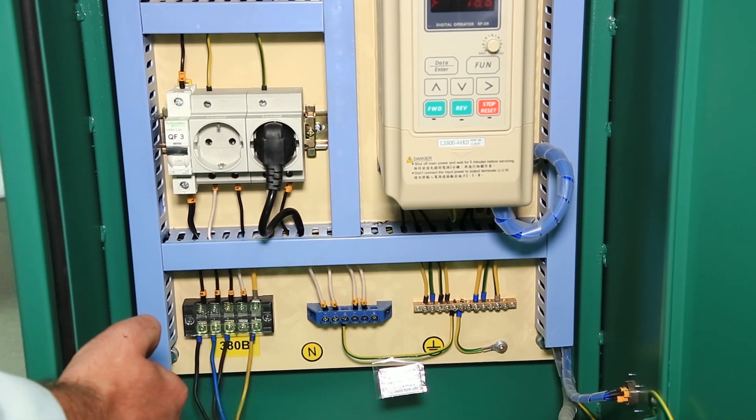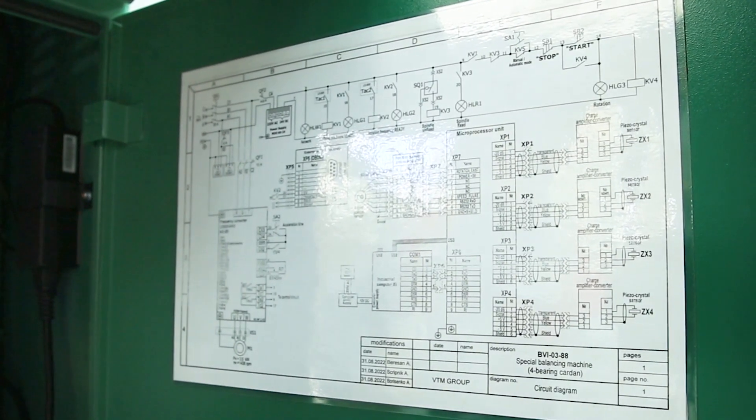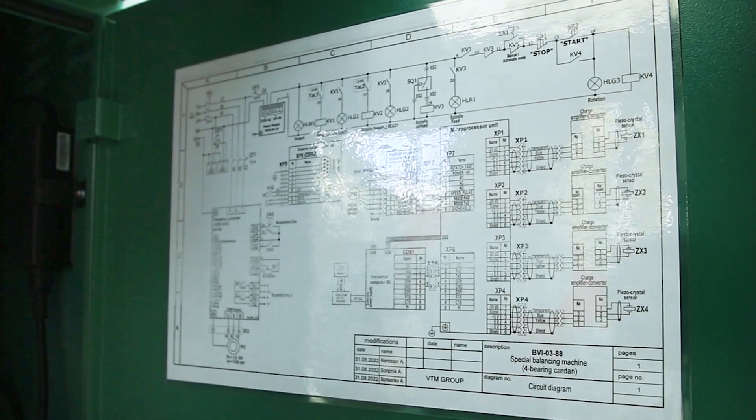Also, when using a five-wire circuit, this jumper needs to be removed. There is also an electrical circuit on the door of the electrical cabinet, you can contact it if necessary.